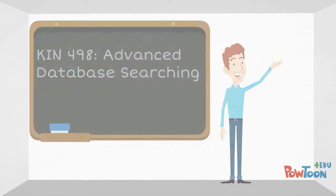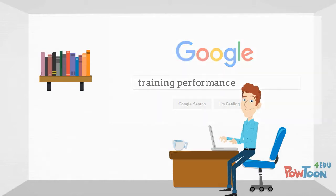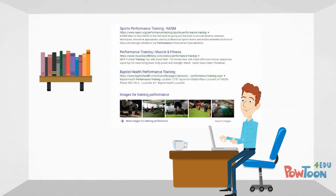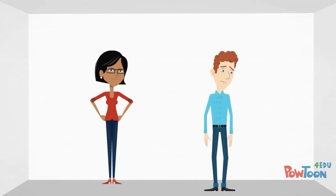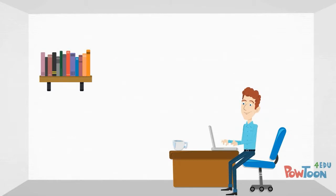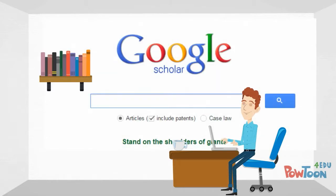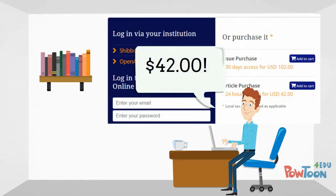As a freshman, Mark did most of the research for his papers using Google. While he usually found lots of sources, he sometimes struggled to find the kinds of high-quality sources his professors wanted him to use. He especially struggled when trying to find free scholarly journal articles. Even when he used Google Scholar instead of a regular Google search, he was often asked to pay for an article.